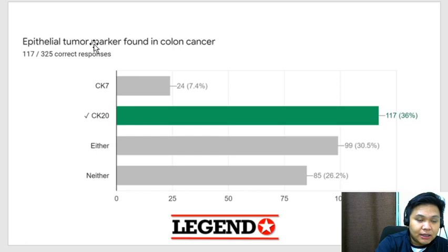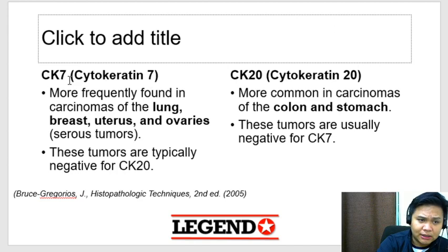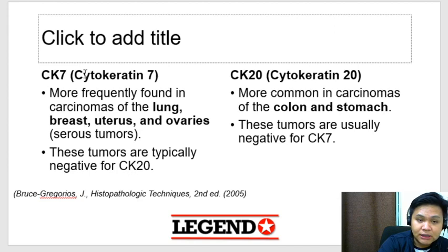Epithelial tumor marker found in colon cancer — the answer is CK20. You have two types of cytokeratin to focus on: CK7 and CK20. CK7 is usually found in lung, breast, uterus, and ovarian tumors. CK20 is associated with colon and stomach. Usually kapag positive sa CK7, negative sa CK20 and vice versa — remember which tumors are positive for each.